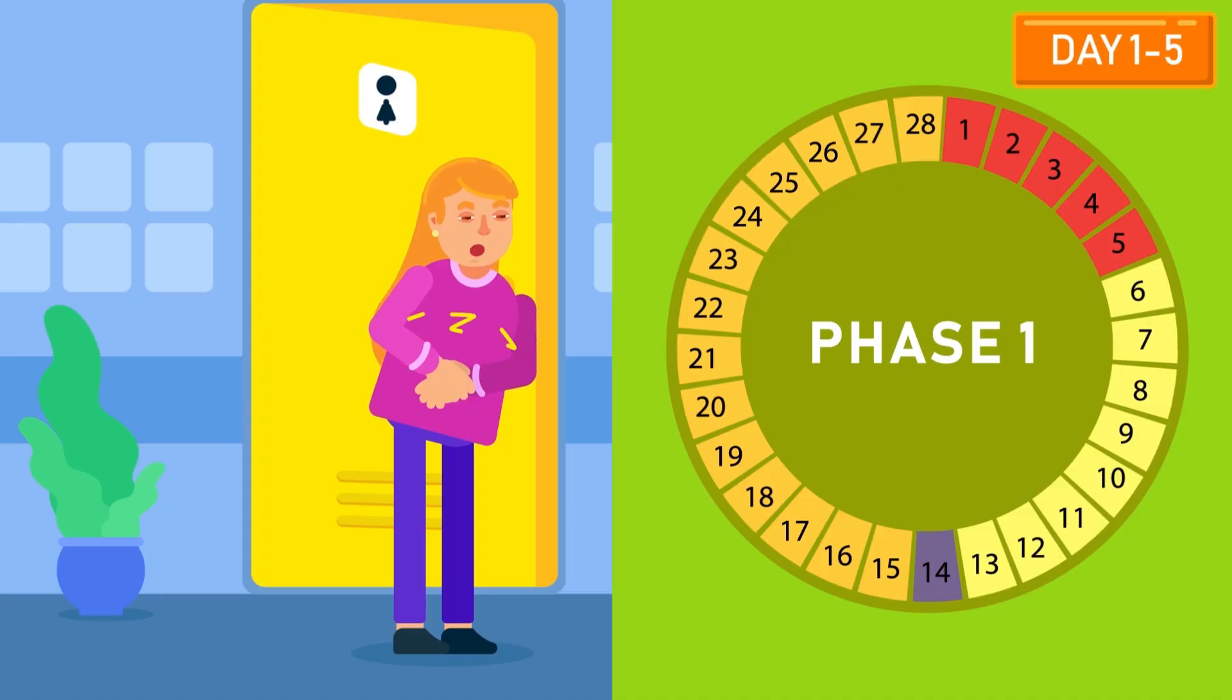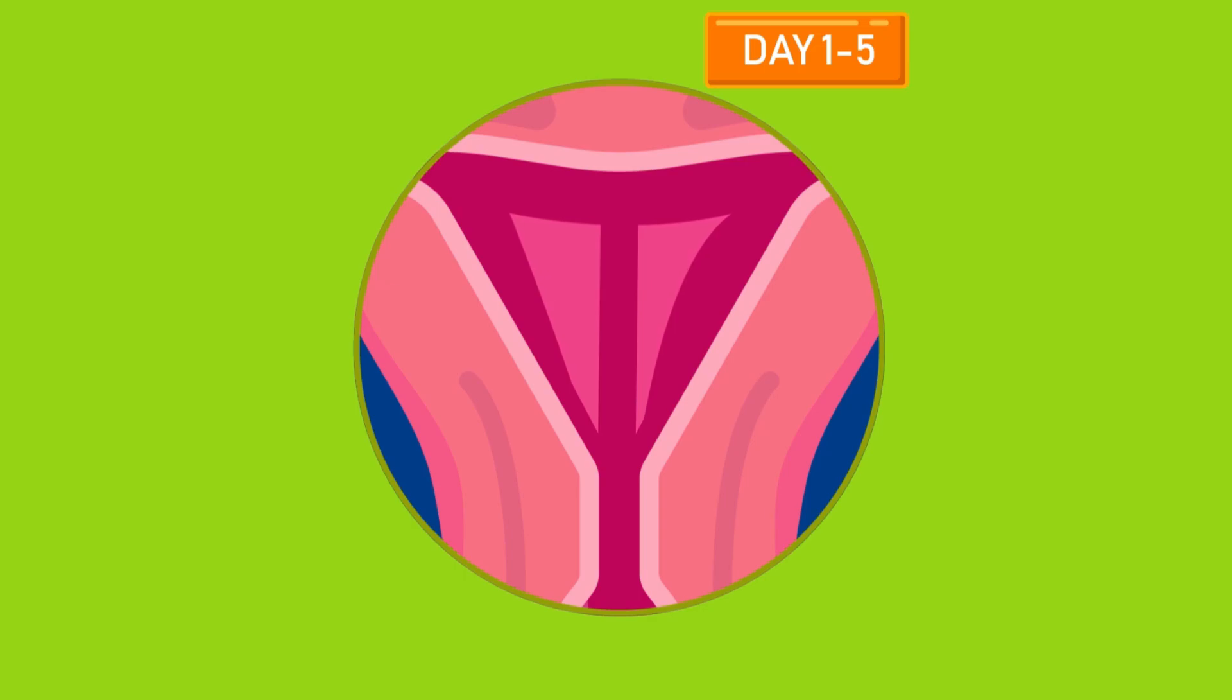Day 1 to 5, Phase 1. The first day of menstruation is day 1 of the menstrual cycle. The endometrium breaks down and flows out of the body. Mostly, the first 5 days are characterized by heavy bleeding.